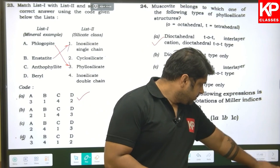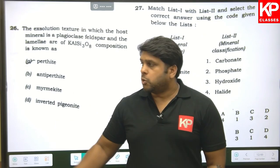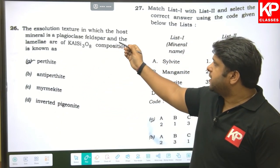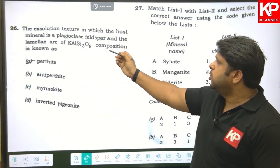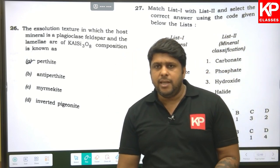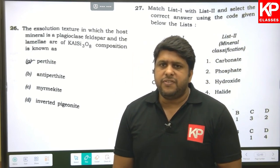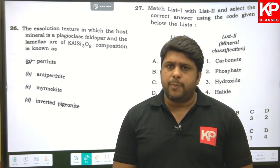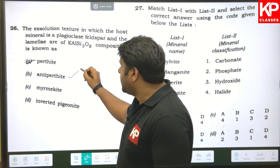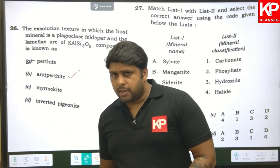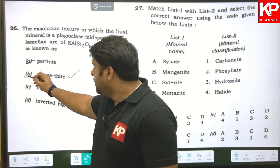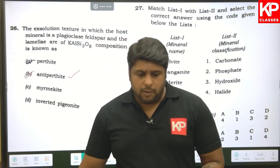Question twenty-six: the exsolution texture in which the host mineral is a plagioclase feldspar and the lamellae is of K-feldspar composition is called anti-perthite texture. The right answer is option B.